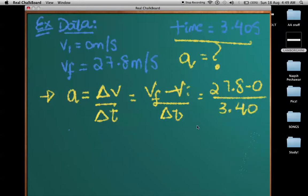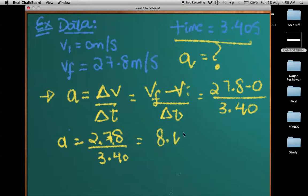So this is simply 27.8 divided by 3.40. Use your calculators to get the final answer, which would be 8.177 or 8.176 meters per second squared.